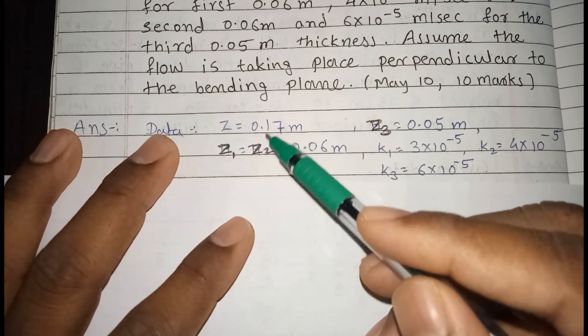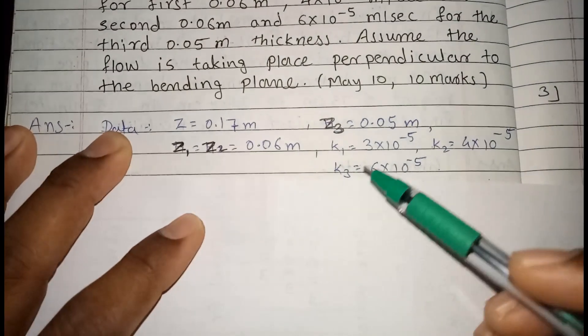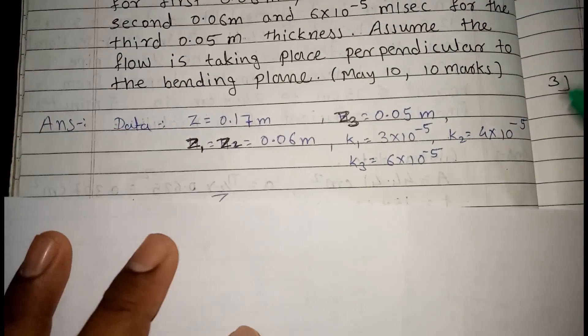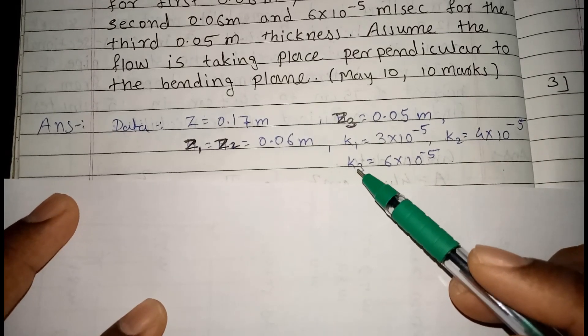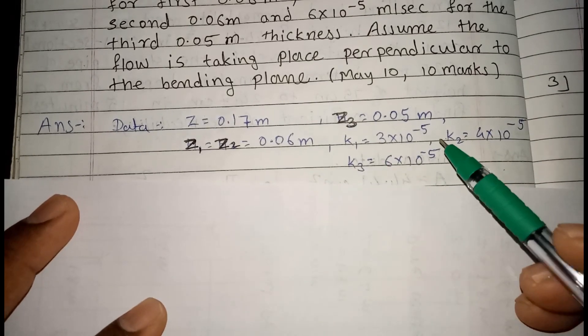Total depth of soil is 0.17 meter. Now here we can see that permeability of Z1 layer, permeability of Z2 layer, and permeability of Z3 layer. These are the coefficients.